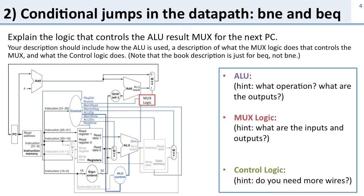Next question: conditional jumps in the datapath. Explain the logic that controls the ALU result for the mux and for the next PC. Here's our datapath. The ALU is doing some work to figure out whether we should do a branch equal or branch not equal. We've got some logic which determines the result from the ALU and some signals from the control that control this mux. What are we going to do in the ALU, the mux logic, and the control logic?